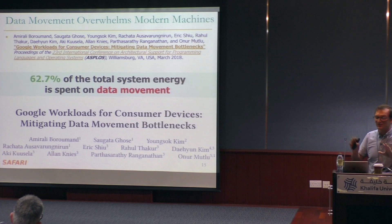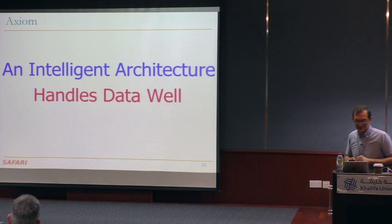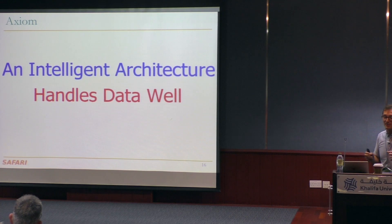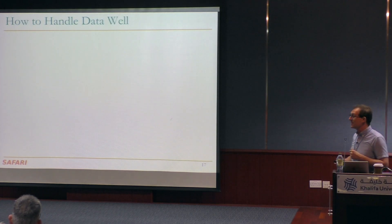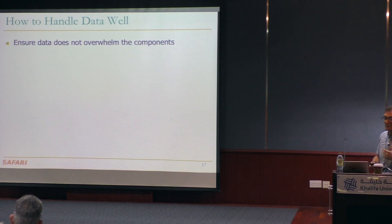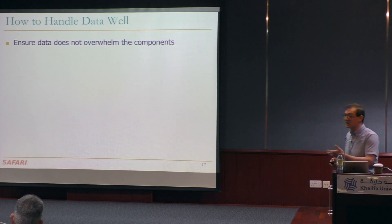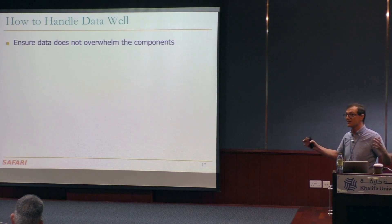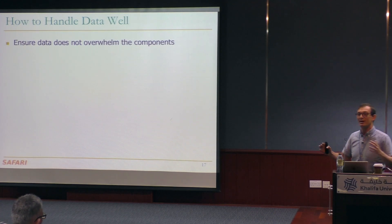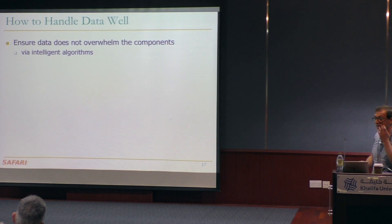This shows me that there's something potentially wrong with the way we're designing systems. My axiom is: if you want to build intelligent architectures, we need to handle data well somehow. The question is how. I believe there are three key things. First, we need to ensure that data doesn't overwhelm the components. Today it's overwhelming — otherwise we wouldn't see 60% of energy spent on data movement. Ideally, we'd like 100% of energy spent on efficient computation.